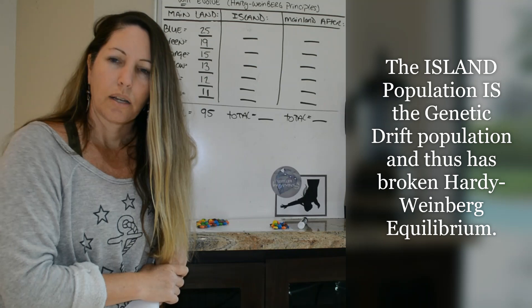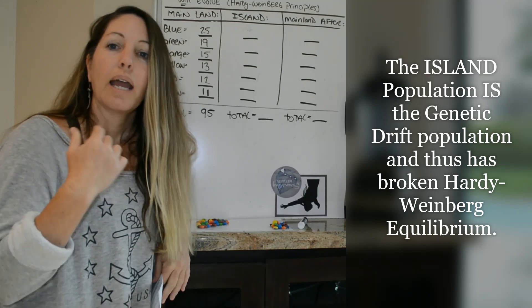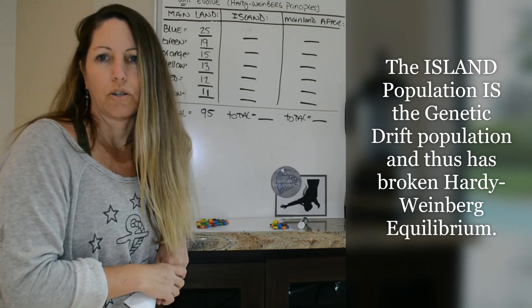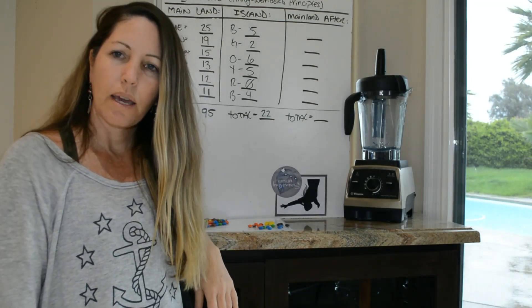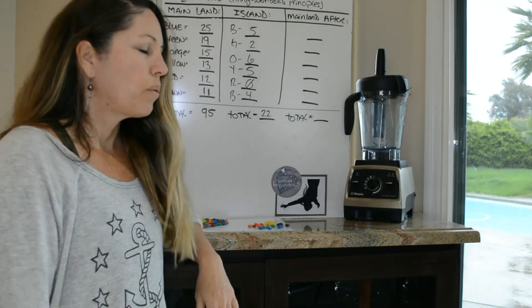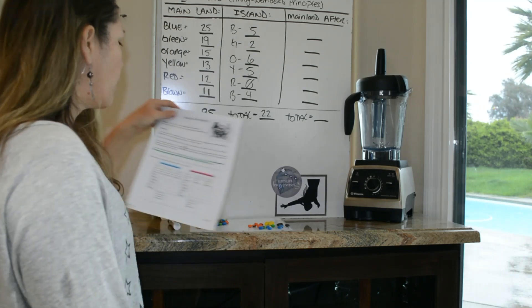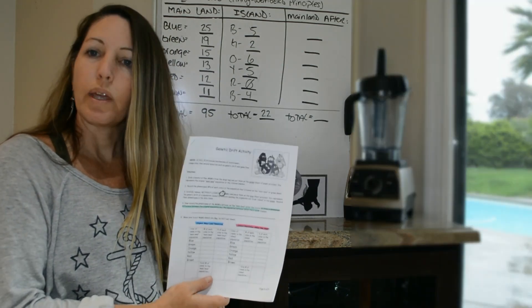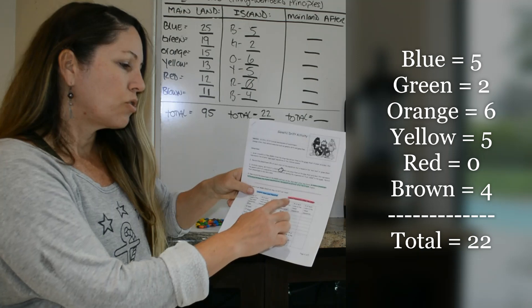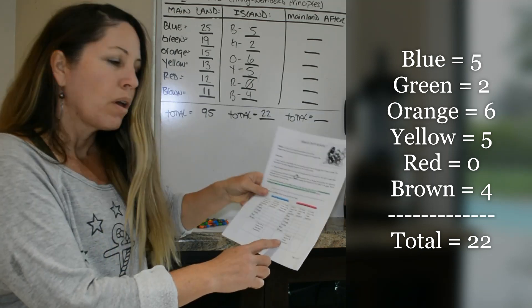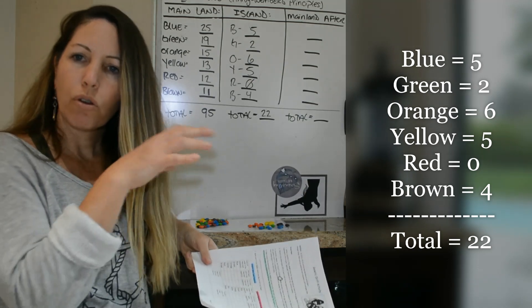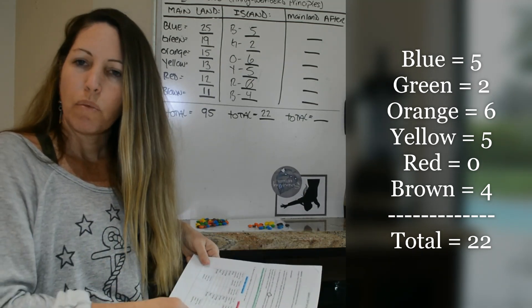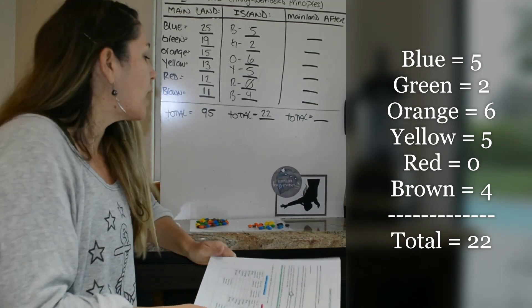The question is, has their genetics changed from the mainland, and will the mainland also change as well? Alright guys, so after counting the M&Ms on my island, I would like for you guys to write down what our data is for the island. Now the island is your second data table. It says island population after the storm.